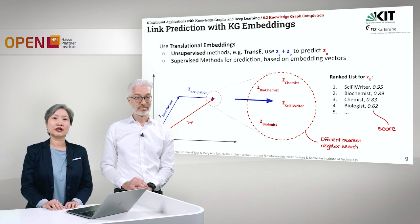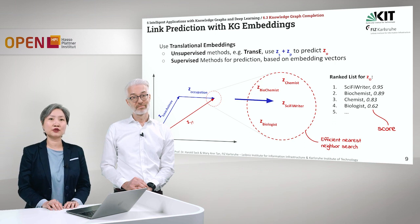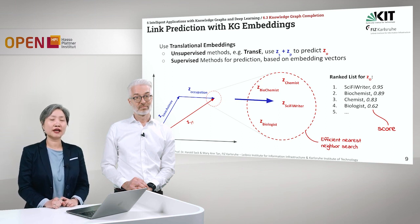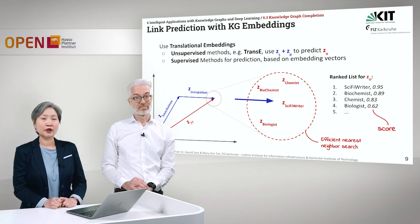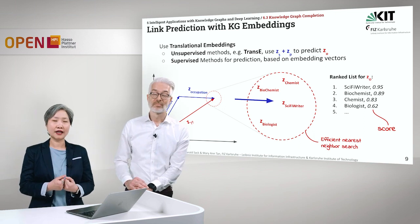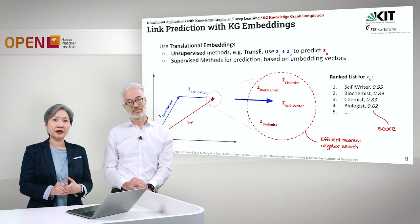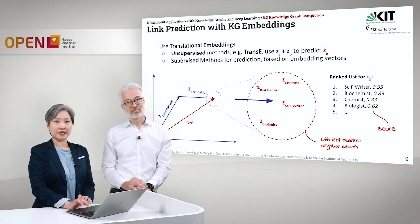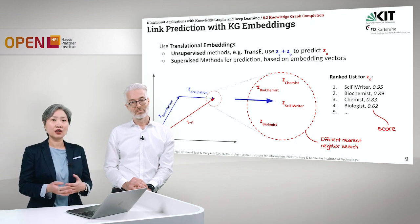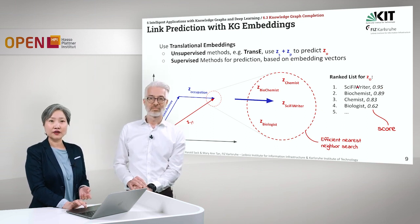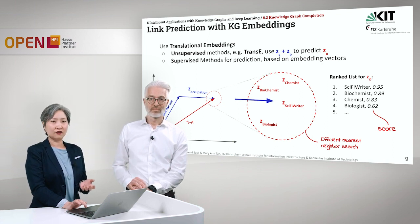Here we illustrate link prediction tasks with knowledge graph embeddings. In particular, we will use translational embeddings — an unsupervised method. For example, in Trans-E, we have the embeddings of the head or subject and the embeddings of the relation or predicate. To predict the tail, we apply vector arithmetic: we sum up the embeddings of Isaac Asimov and occupation, and then look for the nearest neighbor in the embedding space using cosine distance. Sci-fi writer is the most likely tail for the head and relation pair of Isaac Asimov and occupation.